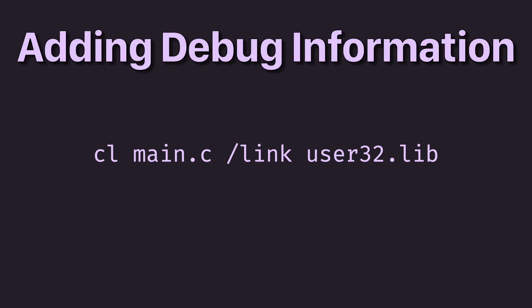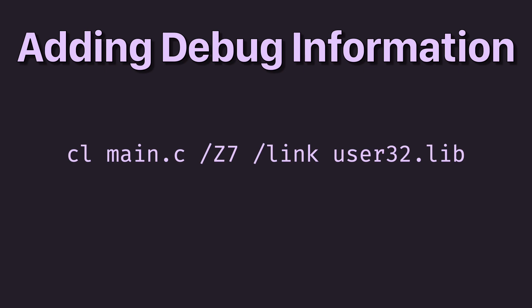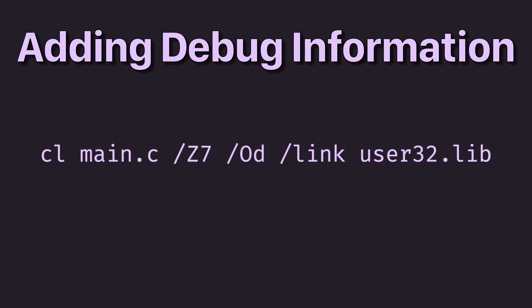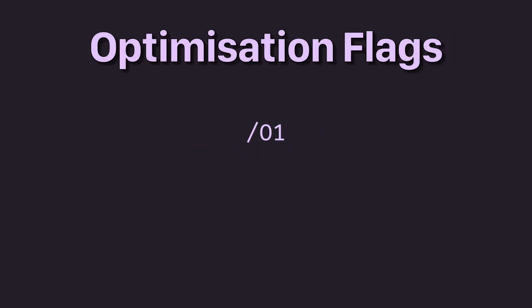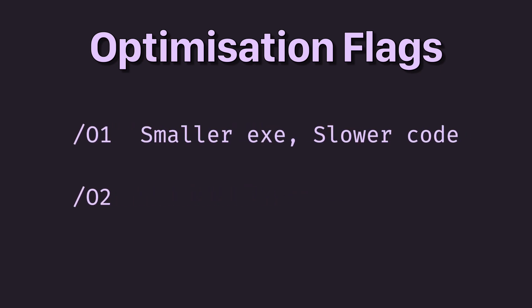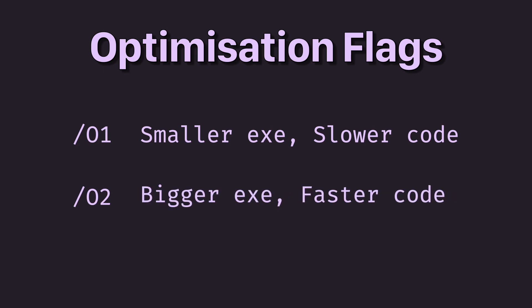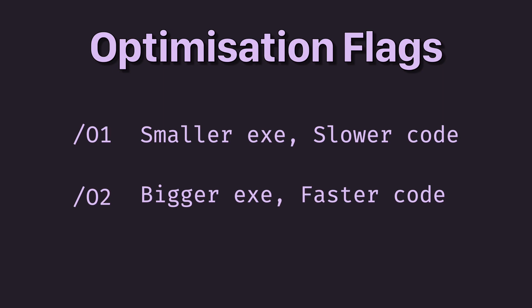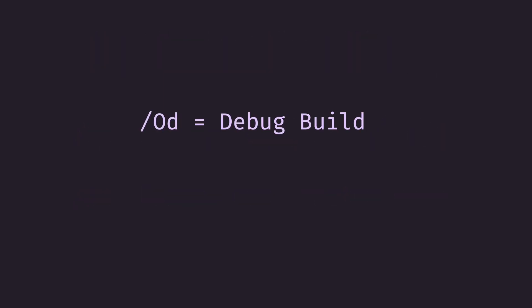Another argument to use with CL is /Z7. This will include debug information into your executable, which will allow you to step through your code while running your application with a debugger. This option works best when paired with the /Od argument. Od will turn off all kinds of optimizations for your program, which makes it easier to debug — however, it also makes it slow, so you should only use Od when trying to debug something. There is also /O1 and /O2. O1 will enable compiler optimizations that favor smaller executable sizes in exchange for speed, while O2 will favor maximum speed in exchange for larger executables. If neither Od nor O1 are specified, then O2 will be used by default. In Microsoft terms, an executable built with Od is called a debug build, while one built with O1 or O2 is called a release build.